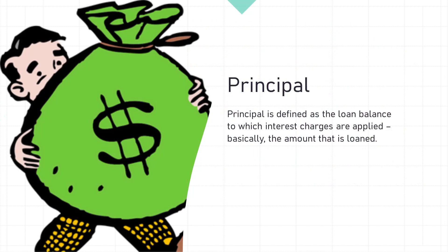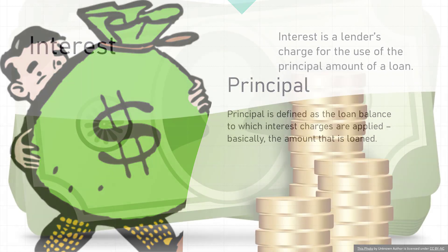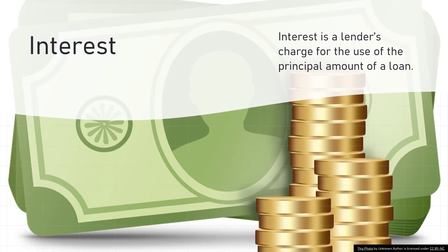Principal is defined as the loan balance to which interest charges are applied — basically the amount that is loaned. Interest is a lender's charge for the use of the principal amount of the loan.